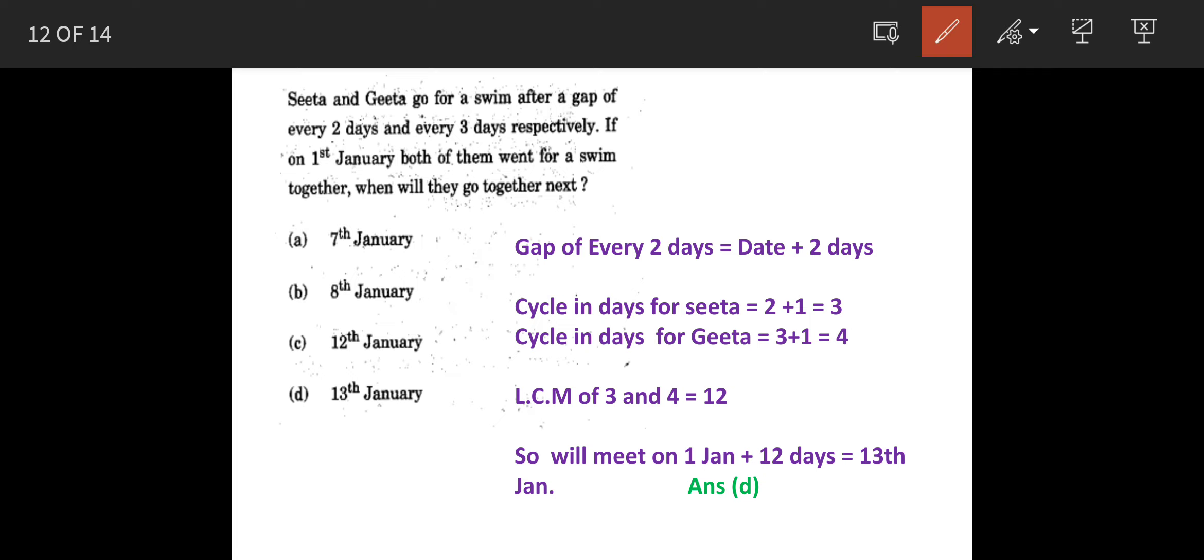Now, every two days means date plus two days. So the cycle for Sita is two days plus first January, that is three days. And for Gita it is three plus one, four days. So we'll take the LCM of these two numbers, which is 12.